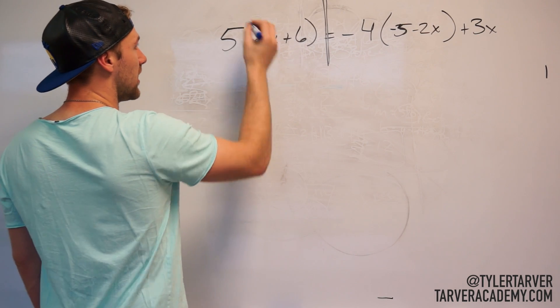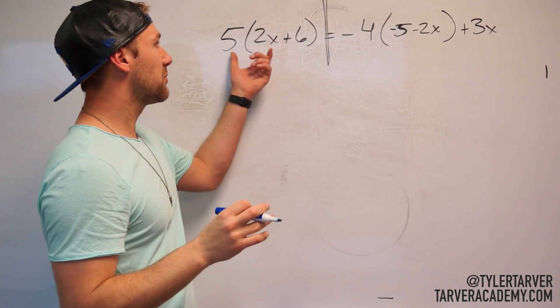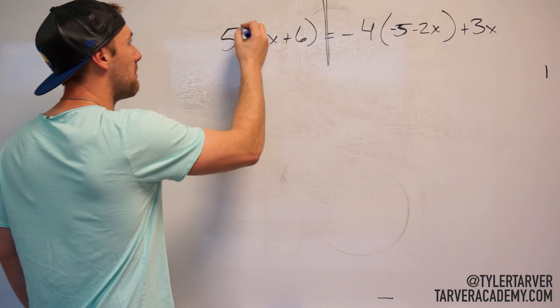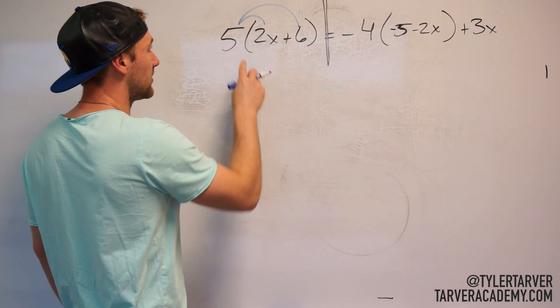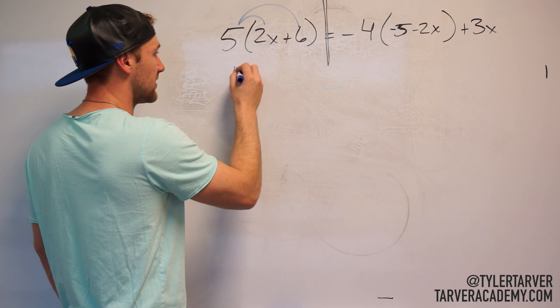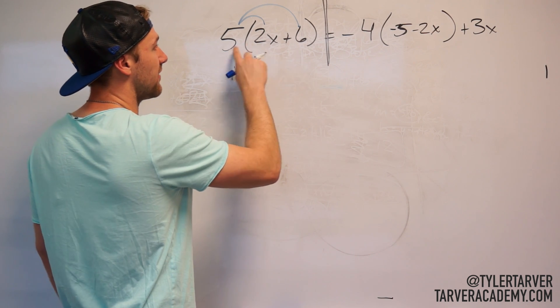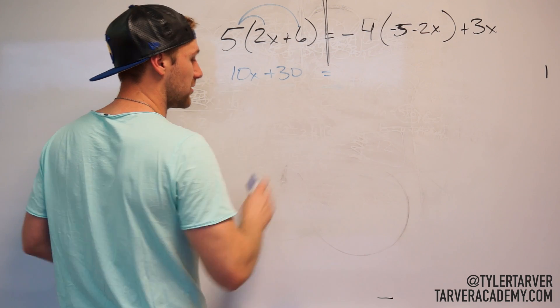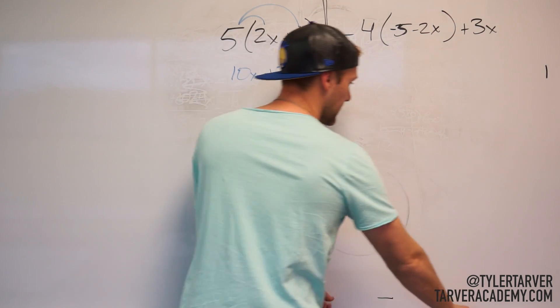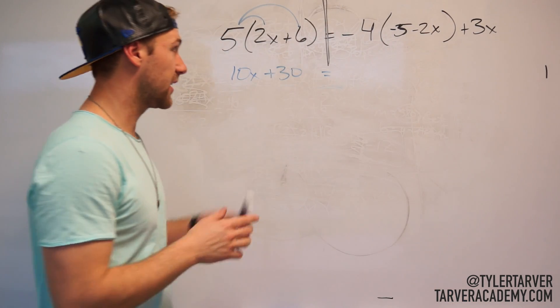So the trick is don't just multiply whatever's in the front. You multiply both. That and that. So 5 times 2x is 10x. And then 5 times 6 is 30. Do my equal sign. I'm getting a different color because, you know, aesthetics.